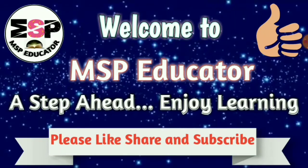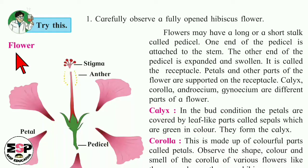Hello dear children, welcome to my channel MSP Educator. We are learning General Science, Standard 7, Lesson Number 2: Plant Structure and Function. We have studied in the previous videos about the parts which are root, stem, and leaf. Today we are going to learn the next part of the plant, that is the flower.